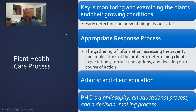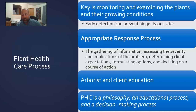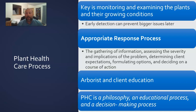The key is monitoring and examining the plants and their growing conditions — early detection will always prevent bigger issues later. Really understand what species you're planting, where you're planting it, whether it's susceptible to a problem, and how you can avoid it. Maybe we're even at the stage where we ask: do we really want to plant this tree, or should we plant a different one instead?